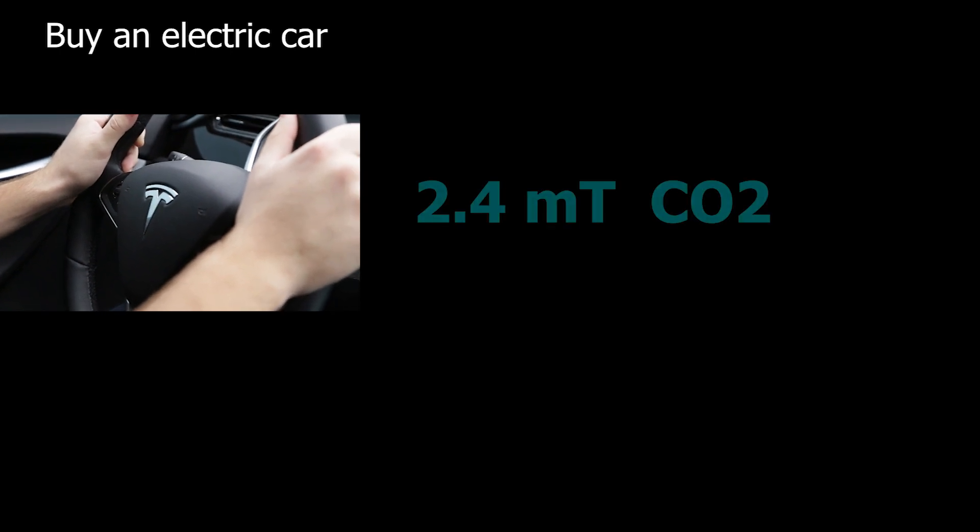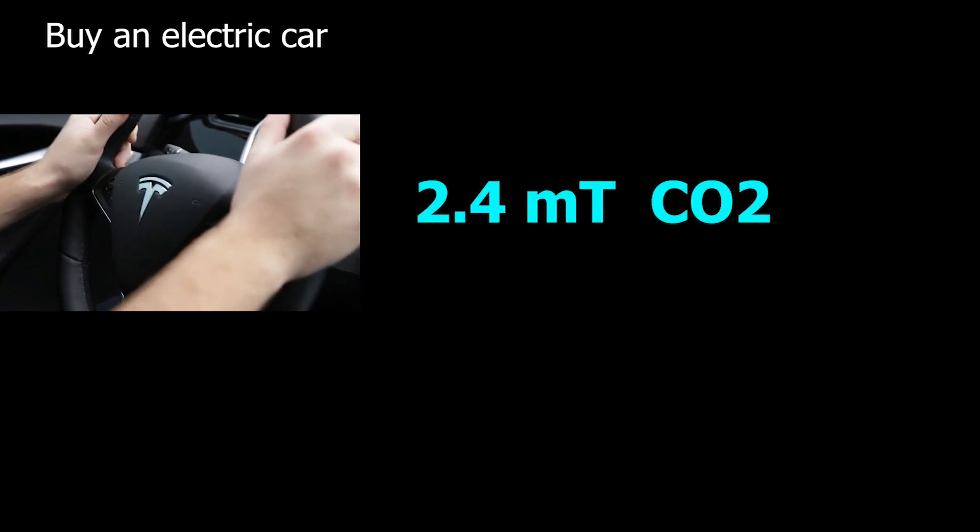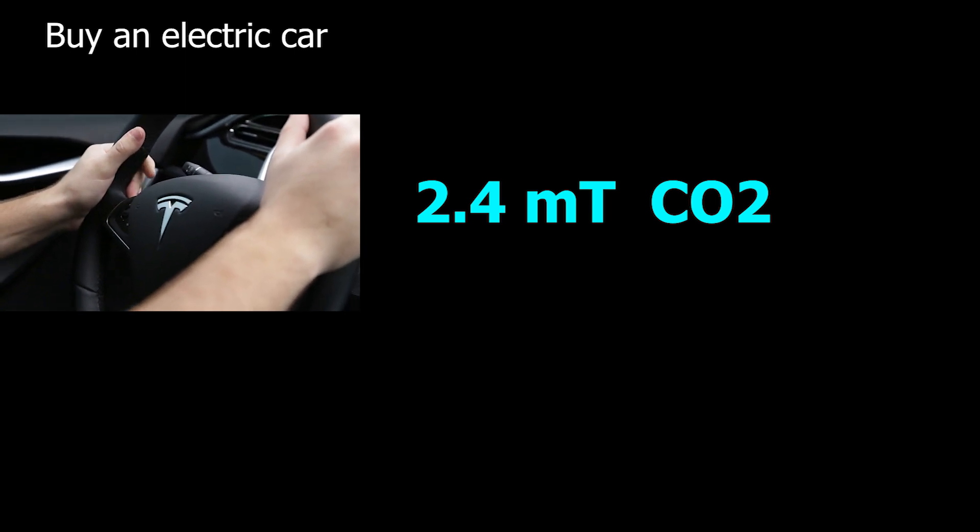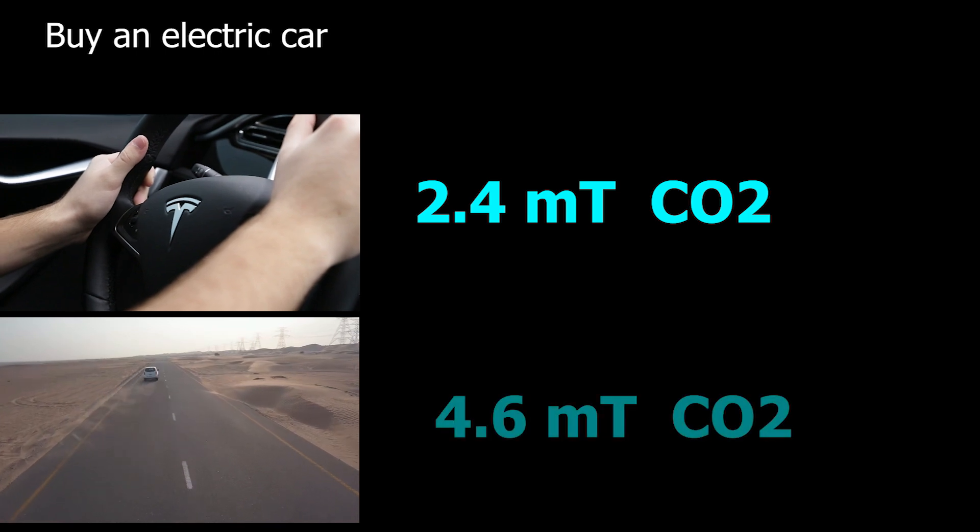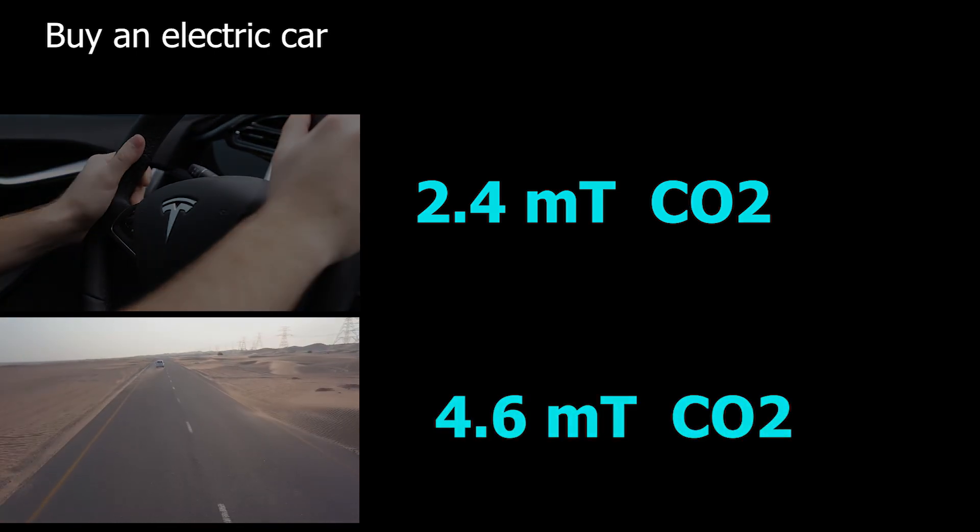What else can you do? Buy an electric car if you can. For example, driving a Tesla in one year, about 18,000 kilometers, produces 2.4 metric tons of carbon dioxide. This is from using the power grid to charge the battery. On the other hand, driving an average gasoline car would produce 4.6 metric tons.